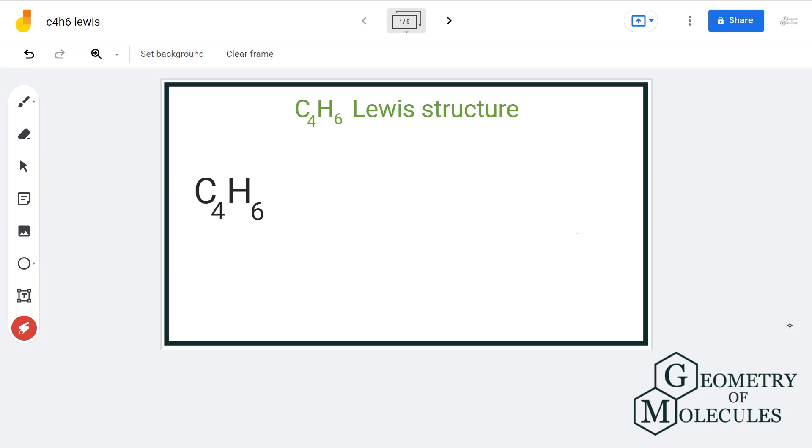Hello guys, welcome back to our channel. In this video we'll discuss all the possible Lewis structures having formula C4H6. In organic chemistry there can be many possible compounds having same formula, same number of atoms, but different structural arrangements.